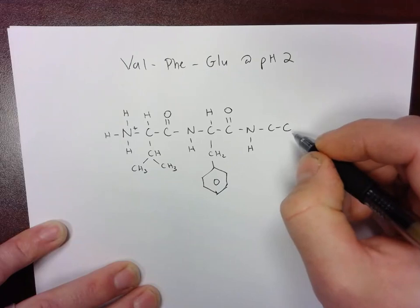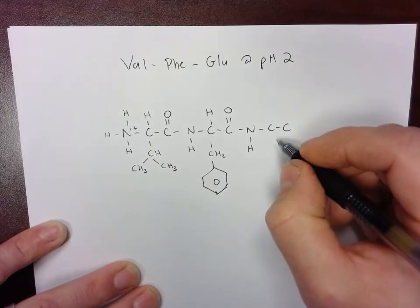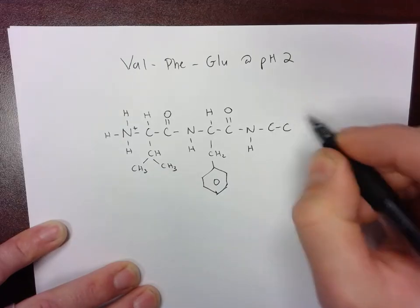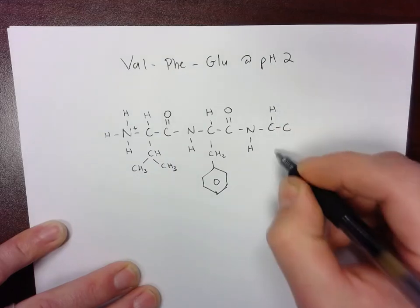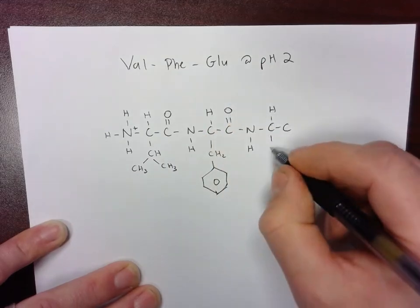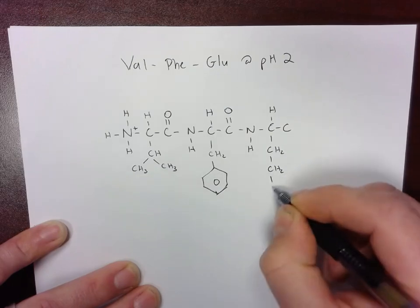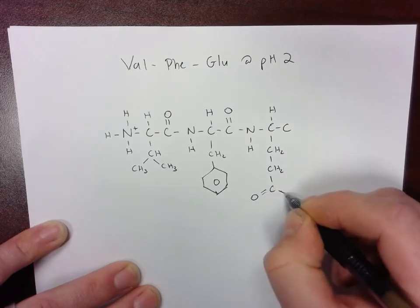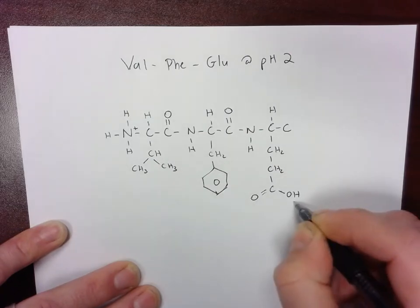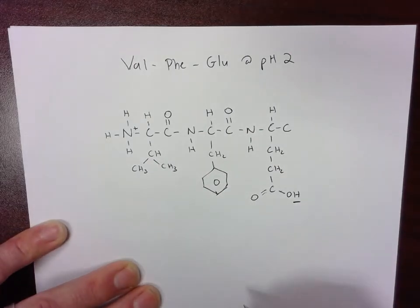And onto the third and final amino acid in this chain. Got a hydrogen coming off the top. And then glutamic acid, which is going to have two CH2s and then a carboxylic acid. So this is going to be protonated at pH 2.